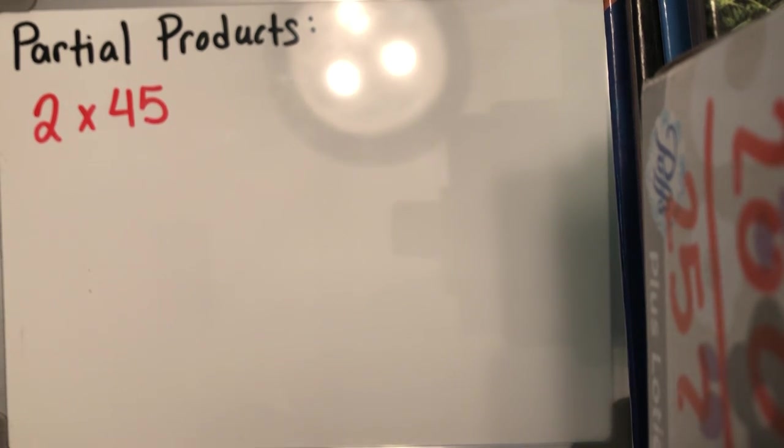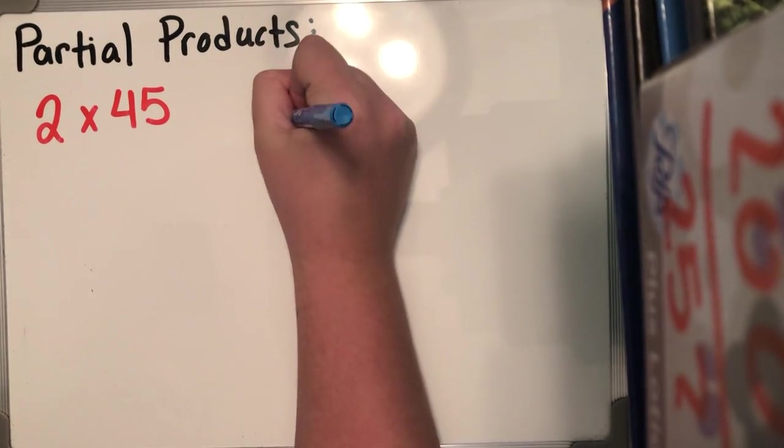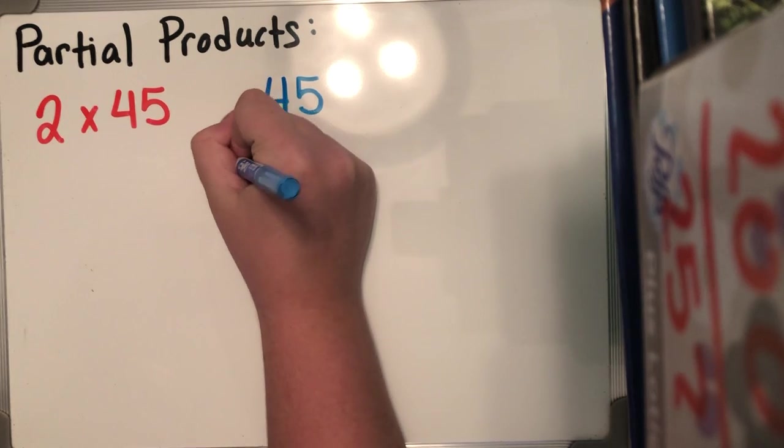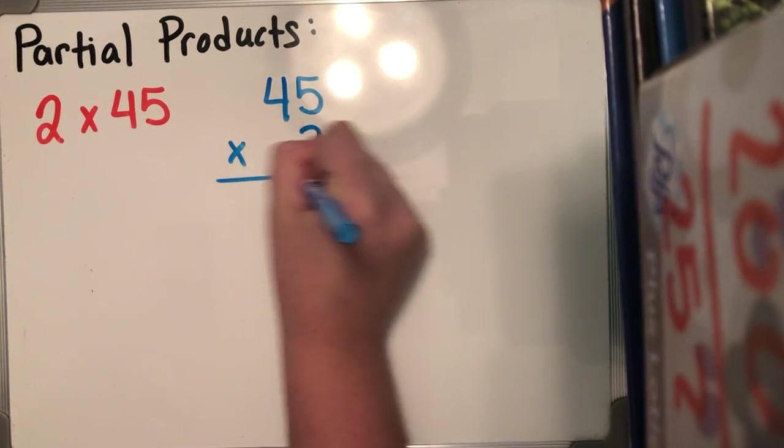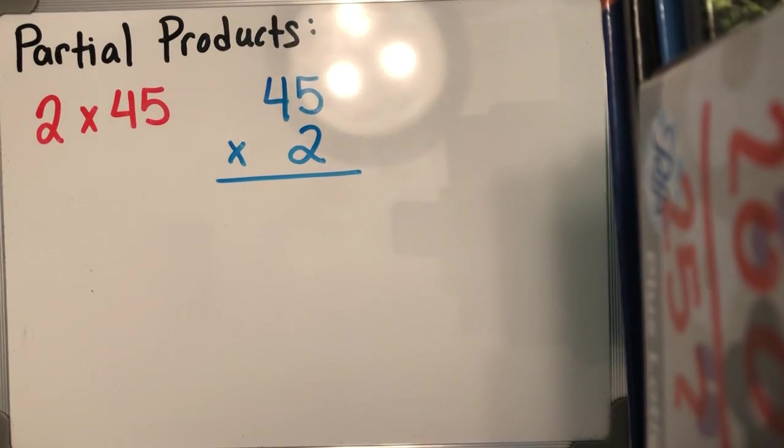So for example, I have two times 45 written on my board. I'm gonna take this number and write it vertically so that way I am able to do my math, a little bit easier for me to understand and solve. So I'm gonna underline this two just to keep myself in check that I am multiplying by two.